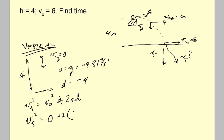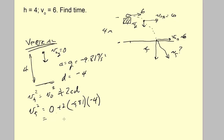The initial velocity is 0, plus 2 times... Notice how the signs work: acceleration is -9.81 and displacement is -4. You can see that if I had made them both positive, we would have ended up in exactly the same situation. So: 2 × 9.81 × 4 = 19.6 × 4 = 78.4.